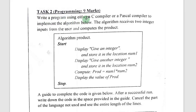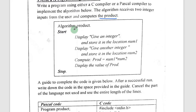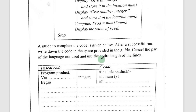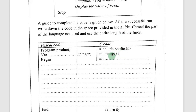They say write a program using either a C compiler or a Pascal compiler. On this channel we write code in C language to implement the algorithm below. The algorithm receives two integers input from the user and computes the product. Since we are writing in C, we should cancel the Pascal part — cancel means you cross it out on your question sheet.